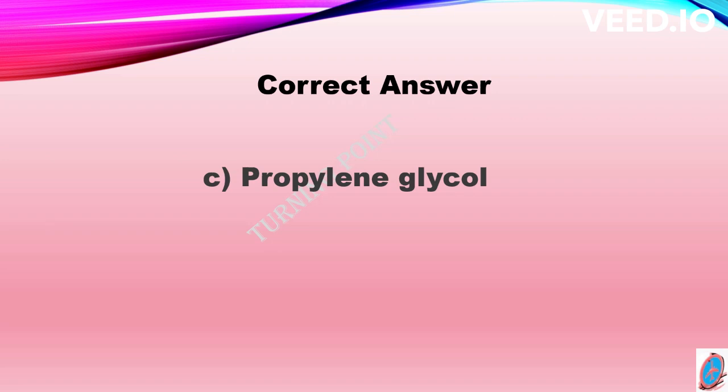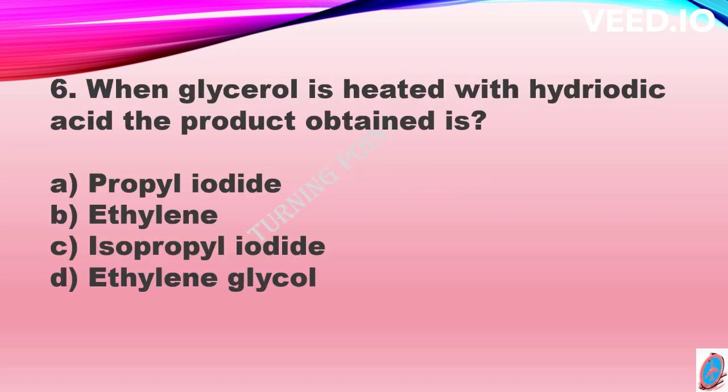Sixth question: when glycerol is heated with hydriodic acid, the product obtained is option A propyl iodide, option B ethylene, option C isopropyl iodide, and option D ethyl glycol. The correct answer is option C, isopropyl iodide.